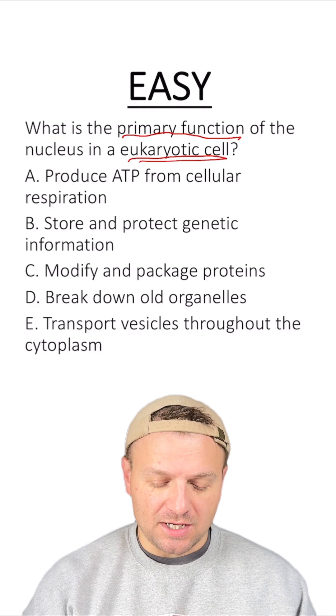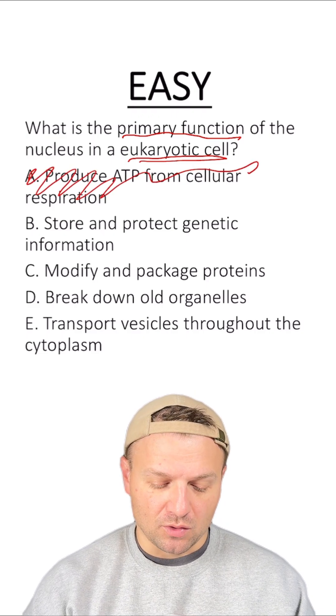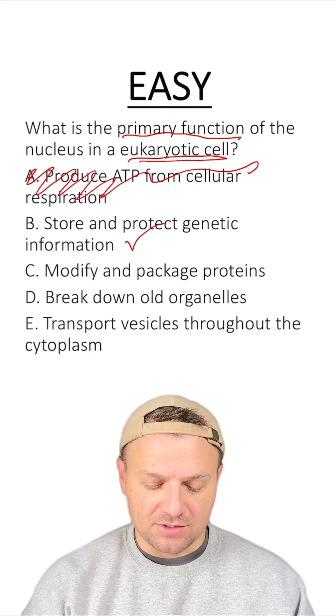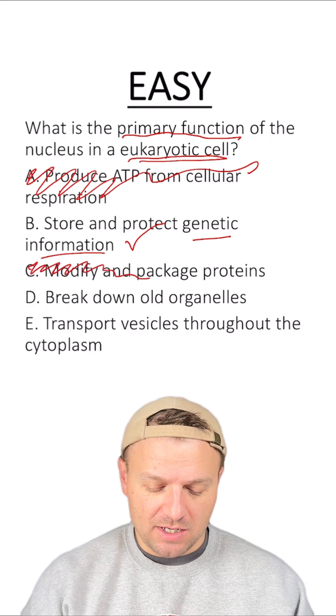Option A: to produce ATP from cellular respiration. No, that's the mitochondria. Option B: store and protect genetic information. That sounds like the right answer. Option C: modify and package proteins. No, that would be the Golgi body.